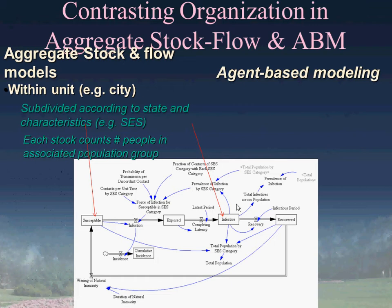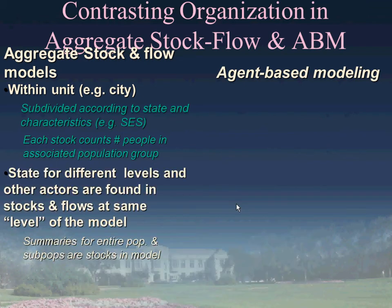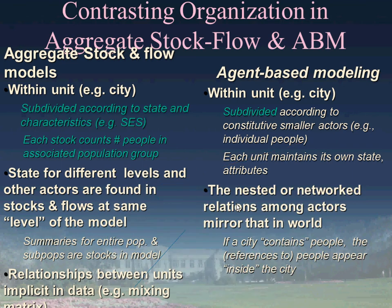For example, we might divide a population across several cities: susceptible in city one, susceptible in city two, exposed in city one, exposed in city two, and then total up prevalence per city and for the whole population—these are just different variables within the same flat model. Whereas in an agent-based context, we have true nesting with levels of nested context, which is very useful for comparing to data drawn from hierarchical linear modeling or mixed-effects models where effects are captured at different levels.